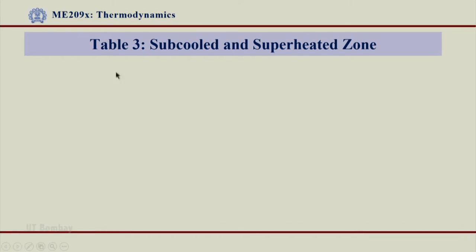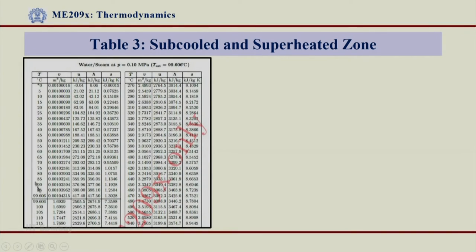Welcome back. Let us see Table 3 and look at the properties that it gives. Table 3 is for the cold and superheated zone, and this is how the table looks — what we had seen earlier when we browsed through the steam table. We can see different things here, and let us go through them one by one to understand what they represent.